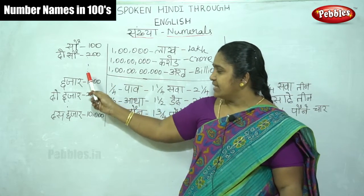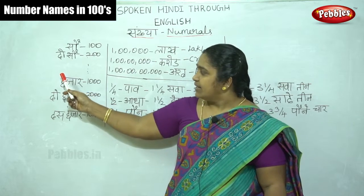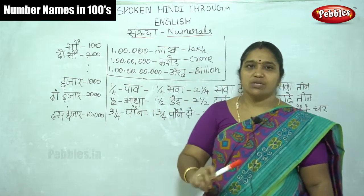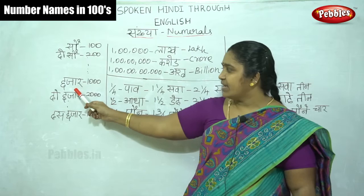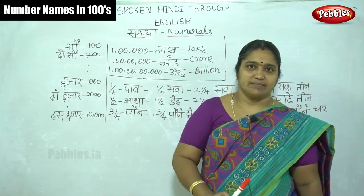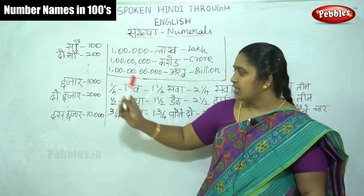We can extend this pattern up to Now Sau for 900. Then we can reach Hazar — Hazar means 1000.